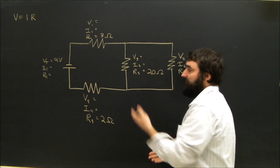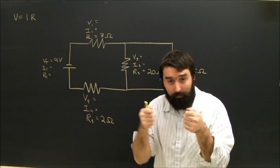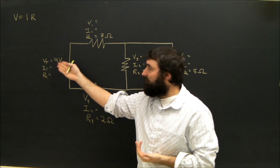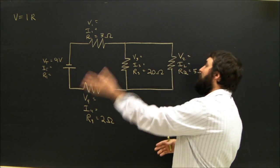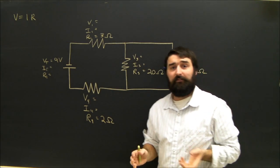Normally we can look at the resistor and see what the resistance is, or we can measure the resistance of an object, and we can usually control or choose the voltage of a source. Now we want to figure out everything else about the circuit.